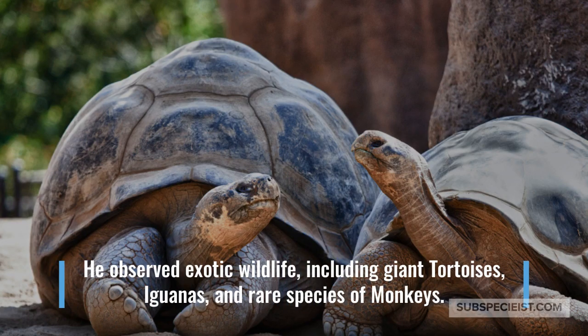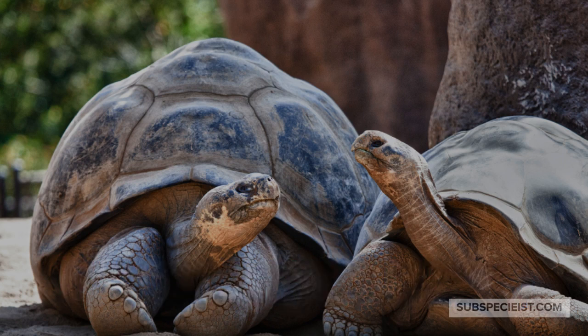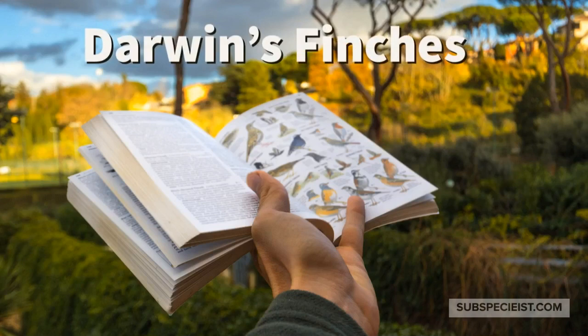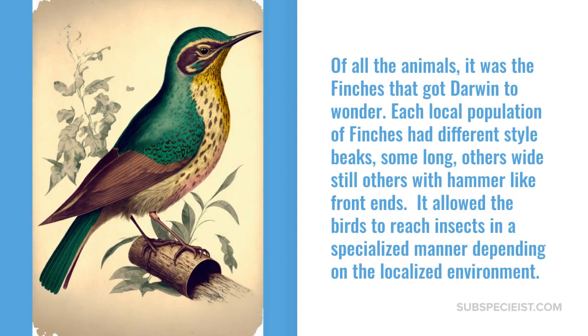He observed exotic wildlife, including giant tortoises, iguanas, and rare species of monkeys. Darwin's finches — of all the animals, it was the finches that got Darwin to wonder.